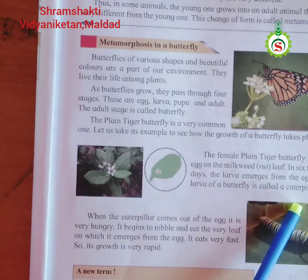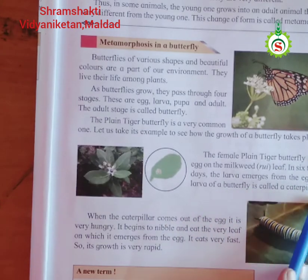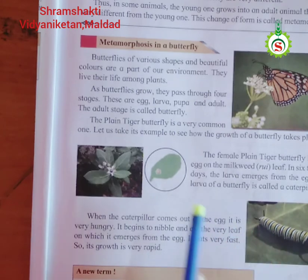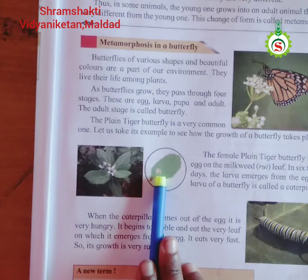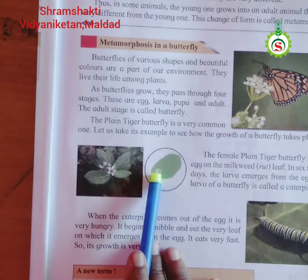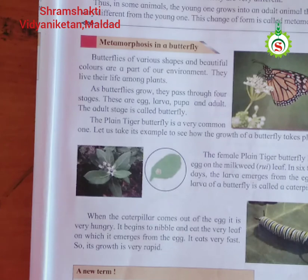The larva of a butterfly is called a caterpillar. From the egg, after 6 to 8 days when growth is completed, the larva comes out of the egg and is called a caterpillar. Caterpillars differ in size and shape, and they also have different colors. This stage varies from one butterfly species to another.